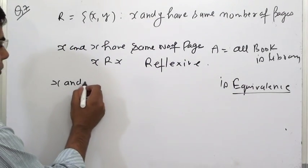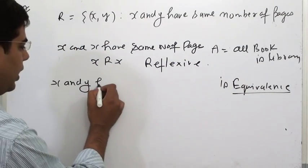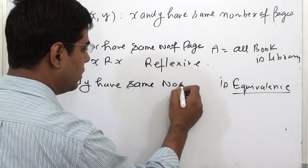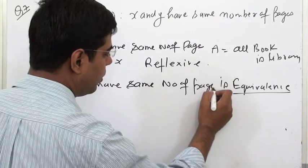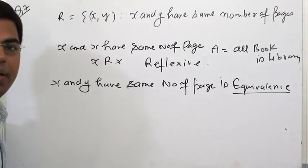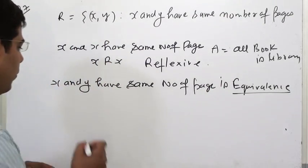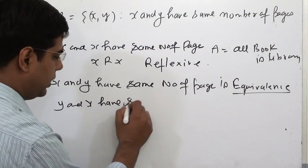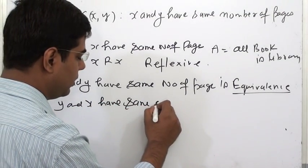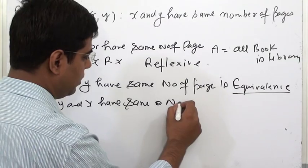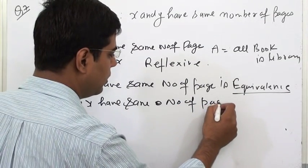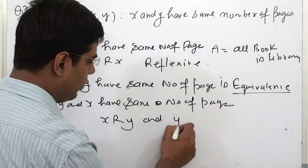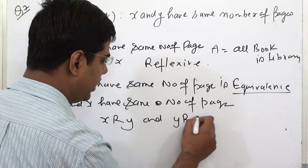Here we can write that X and Y have the same number of pages. From this statement, we can write that Y and X have the same number of pages. So, X related to Y and Y related to X.